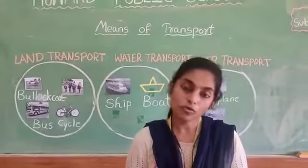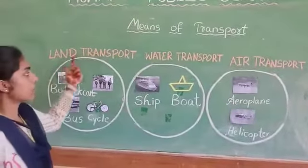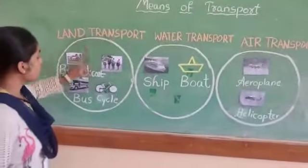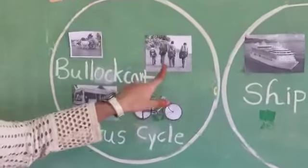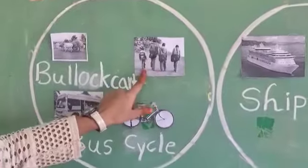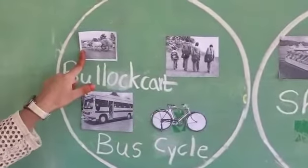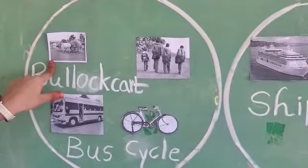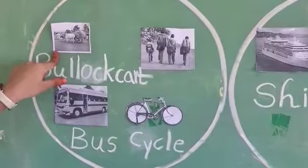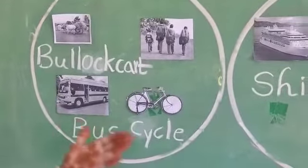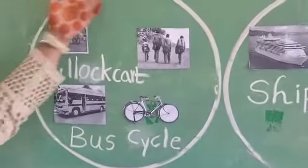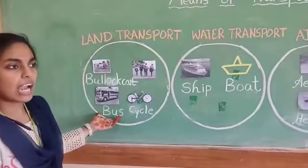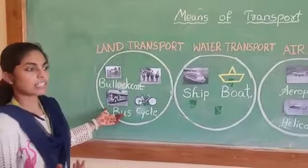We have three means of transportation. The first one is land transport, the second one is water transport, and the third one is air transport. Let us learn about land transport. Before the invention of the wheel, people used to travel on foot. Then they started using animals. After that, people used cycles, cars, vehicles, and buses. The land transport means the vehicles which move on land — for example, bikes, cars, and buses.